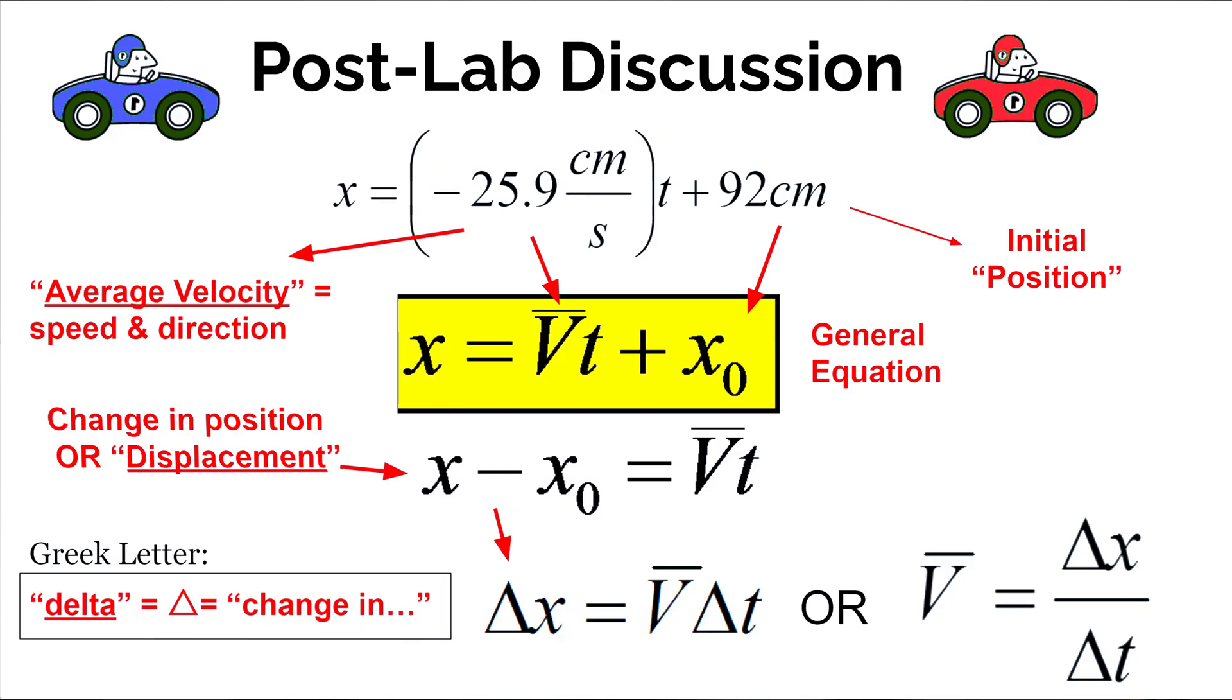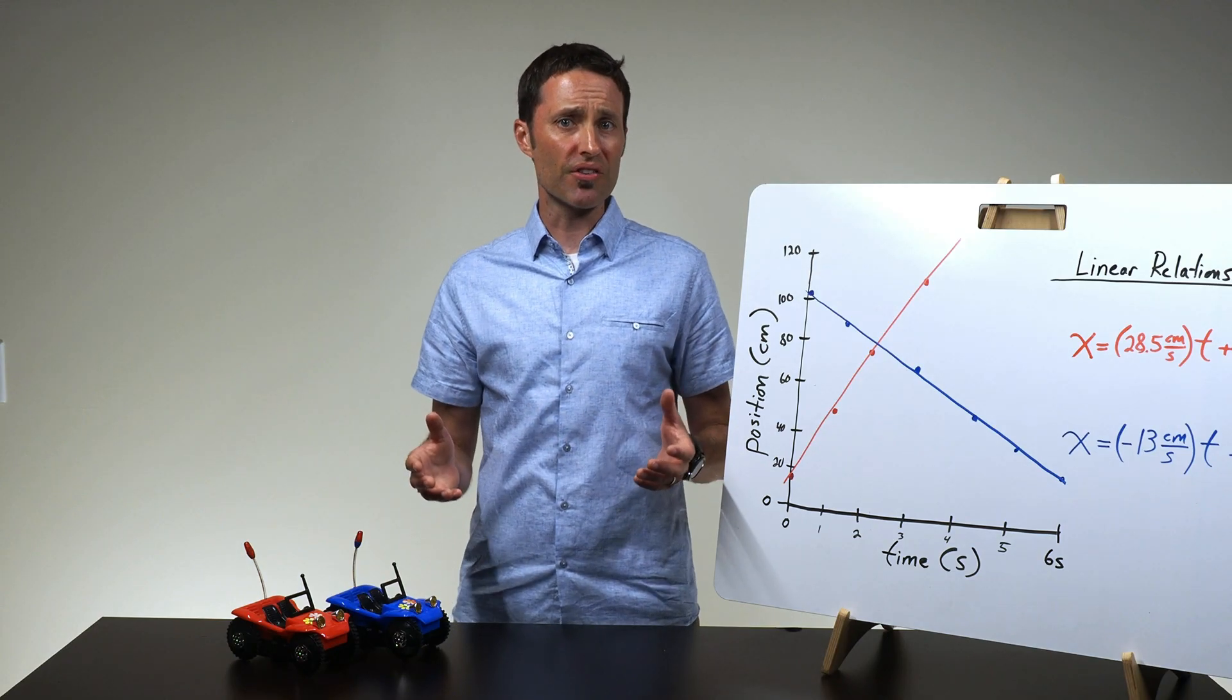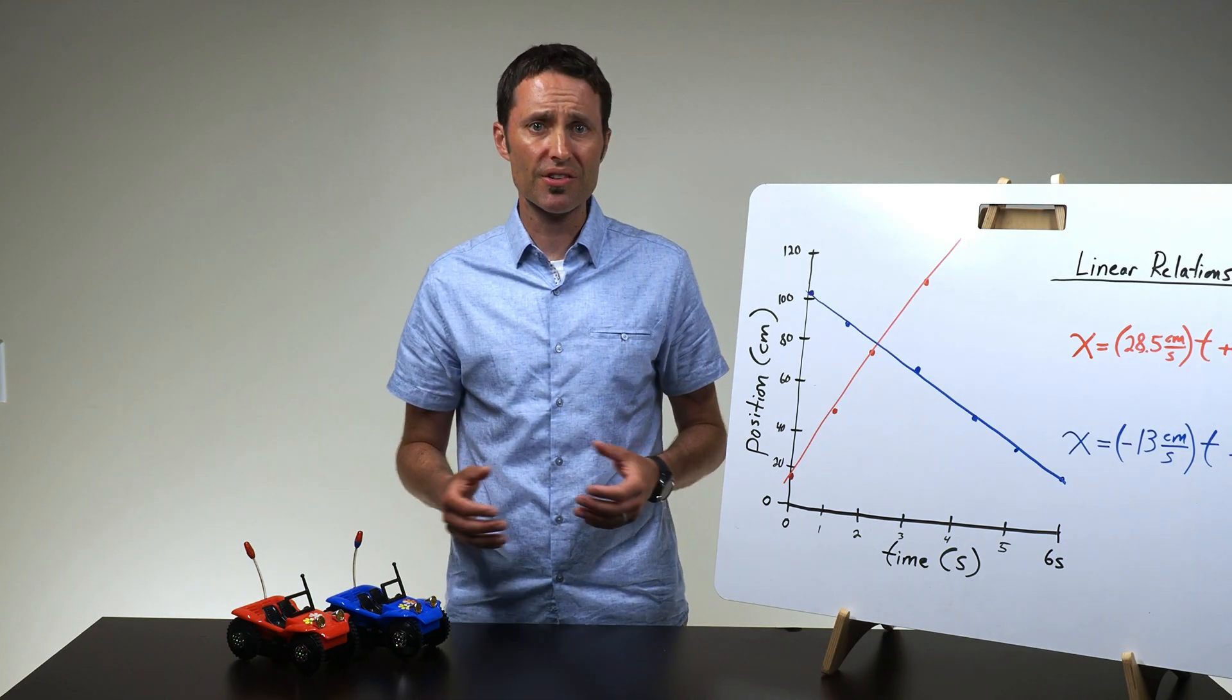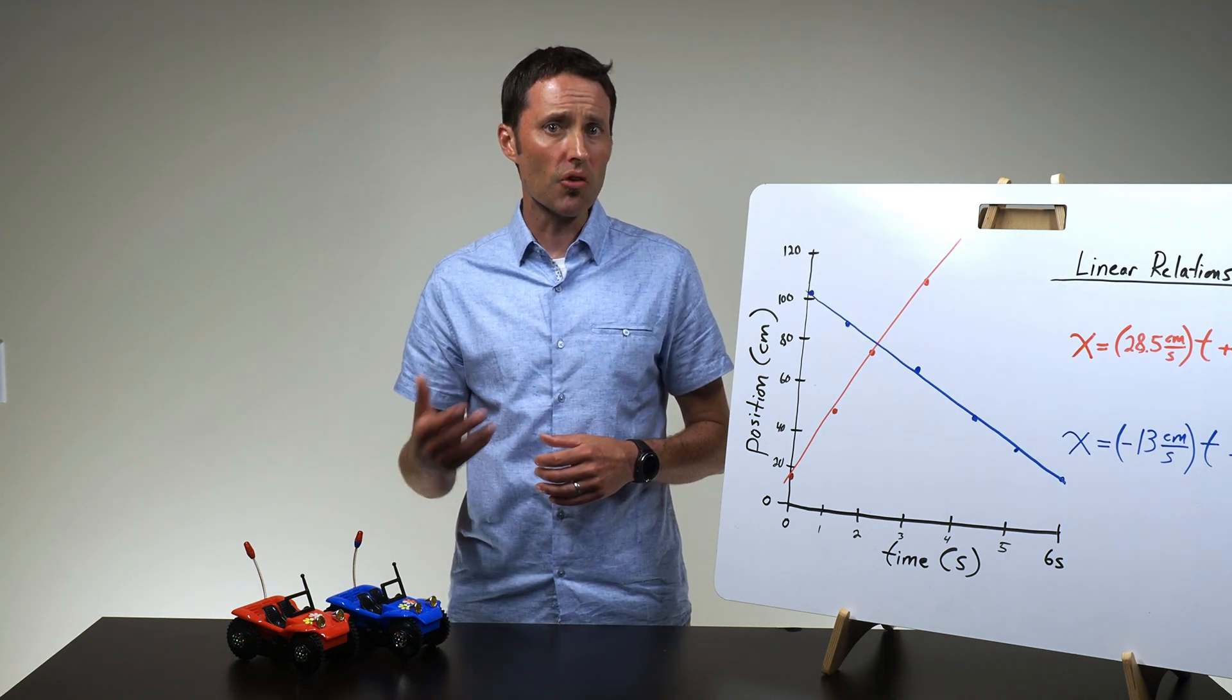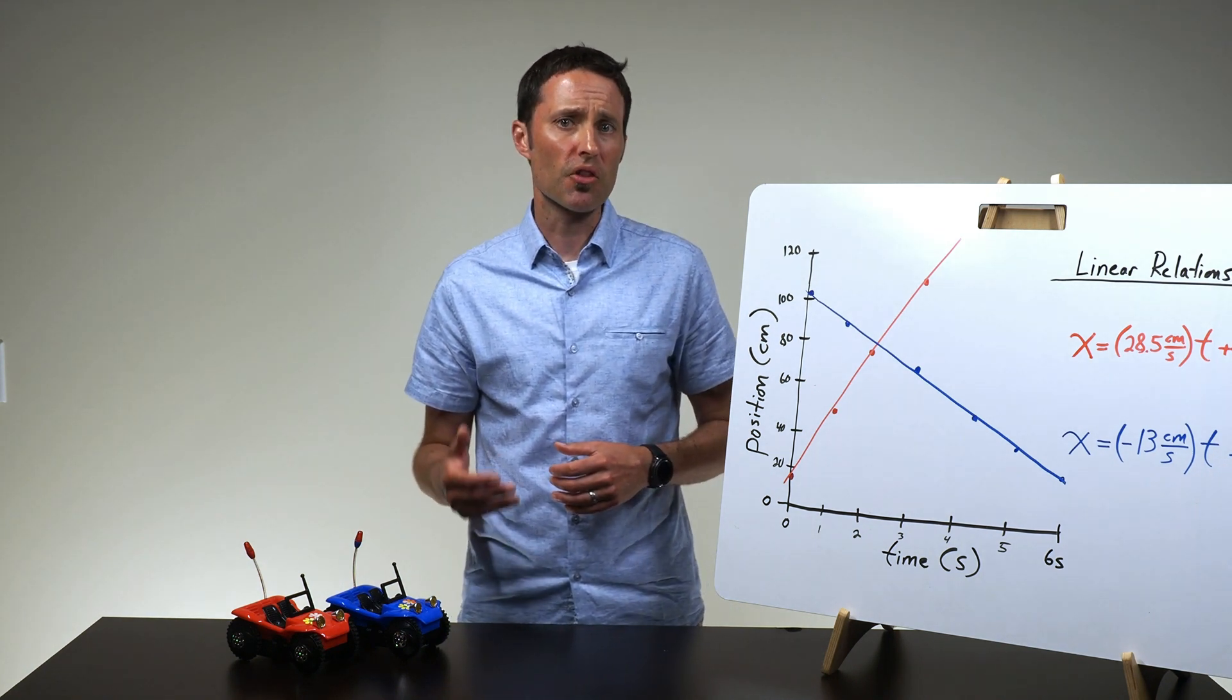Each group's graph and equation only describes how the position of their car is related to time. Now with the consensus about the meaning of the slope and y-intercept, you can define velocity and show students how to write the general equation for all the cars. Simply replace numbers of the slope and the y-intercept with symbols which represent the meaning of each. This general equation not only describes how position and time are related for all of the cars used in the experiment, it is also used to make predictions about the motion of these cars or any other object which moves in a straight line at a constant speed.